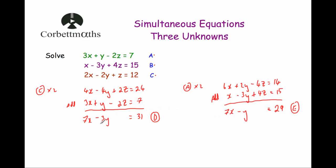I chose to cancel out z, but you could have cancelled out the y's or the x's — that would be fine too. At this point you'd still have two equations with just two variables; it doesn't matter which variable you eliminate, as long as you end up with two equations and two unknowns.